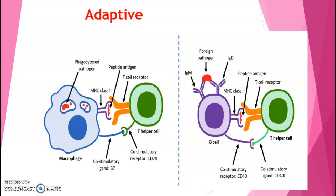B and T cells are extremely dangerous, and if they are able to attack without undergoing a continuous process of activation, a faulty B or T cell can begin attacking the host's own healthy cells.